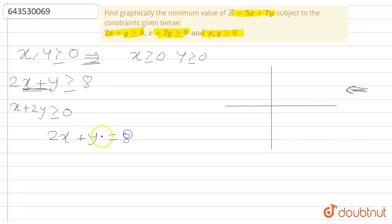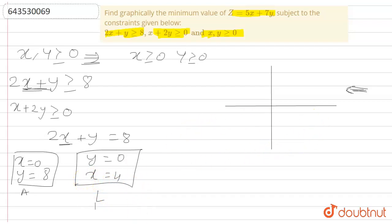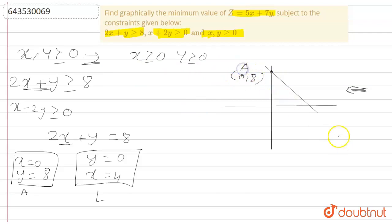First, we'll plot the line 2x + y = 8. When x = 0, y = 8 — this is point A. When y = 0, x = 4 — this is point L. Plotting this on the graph gives a line, where the point is (0, 8) and (4, 0).